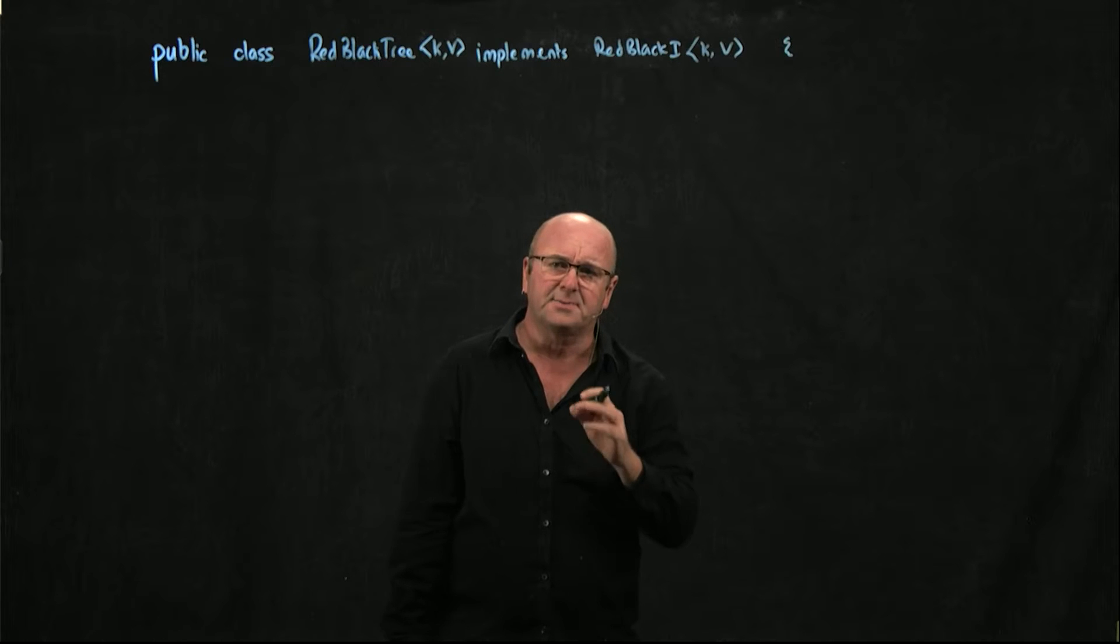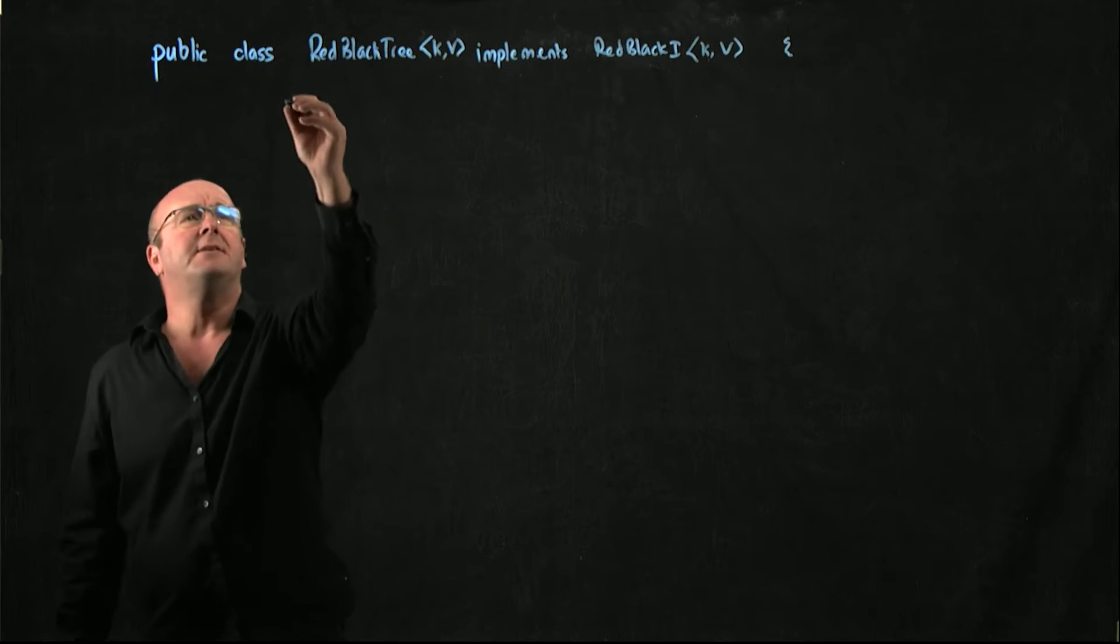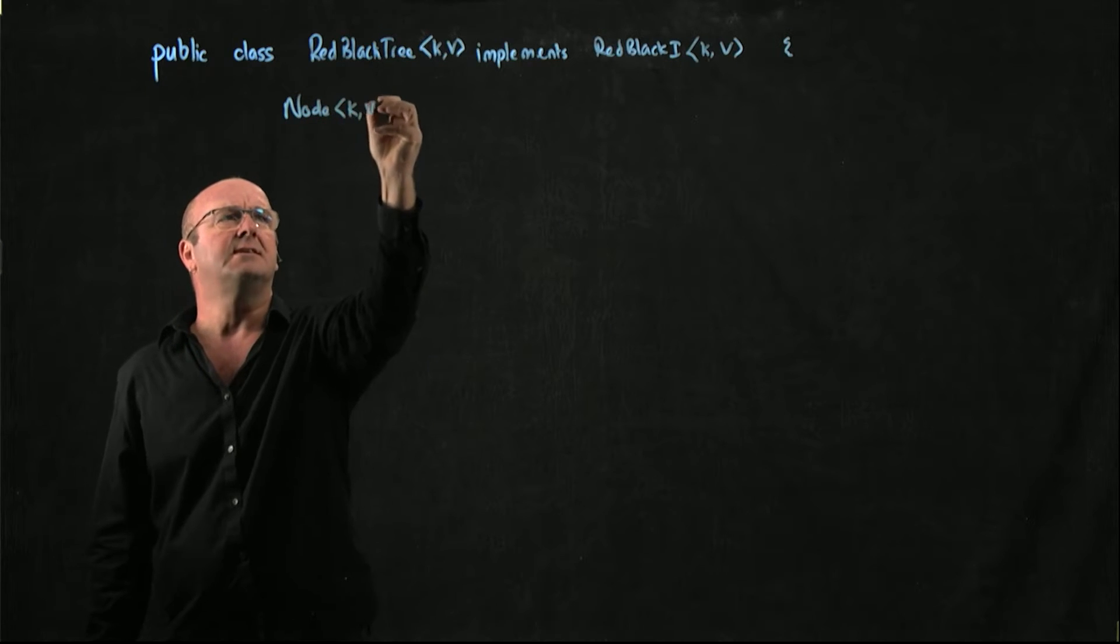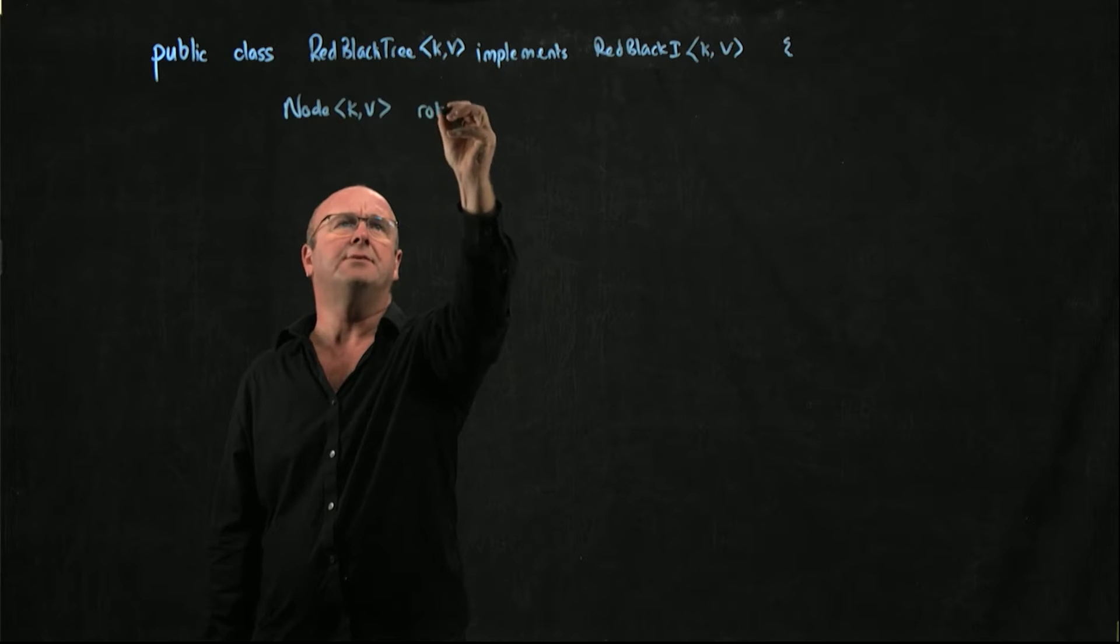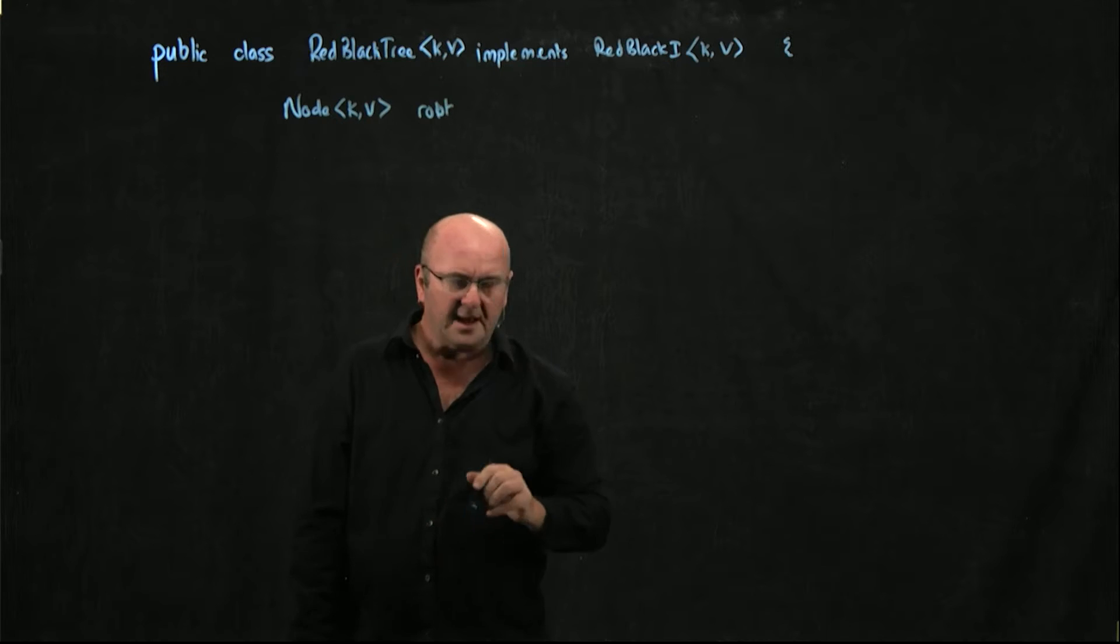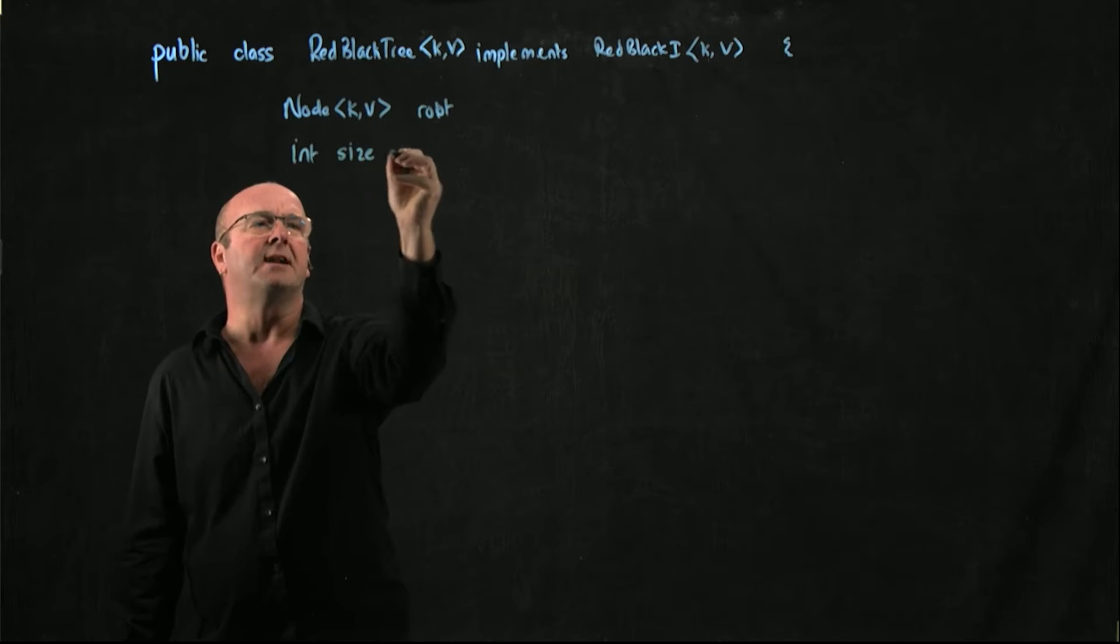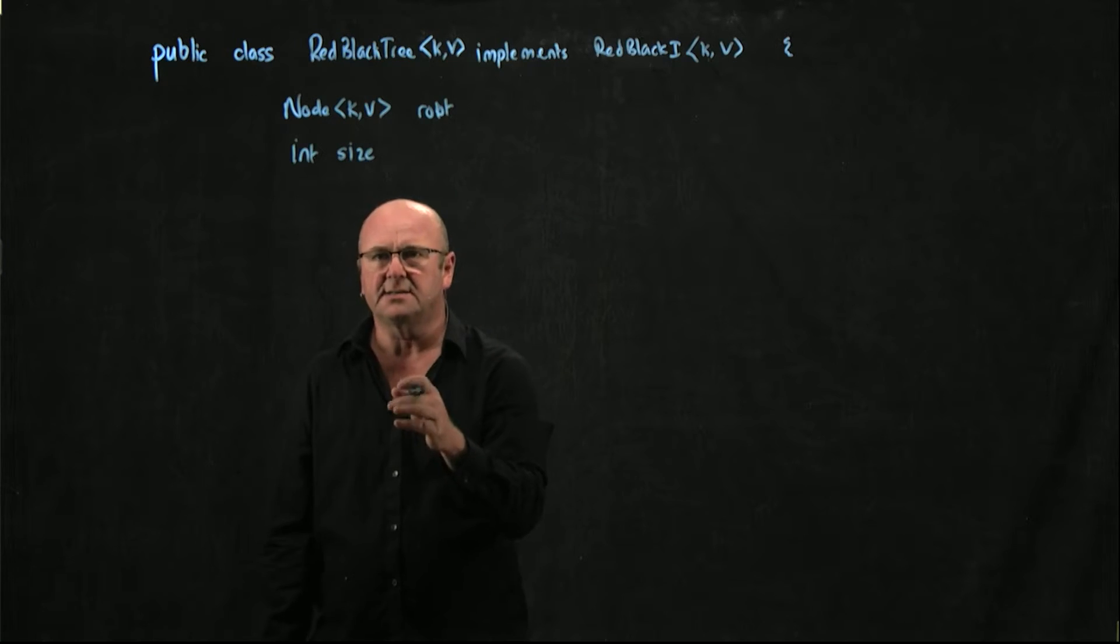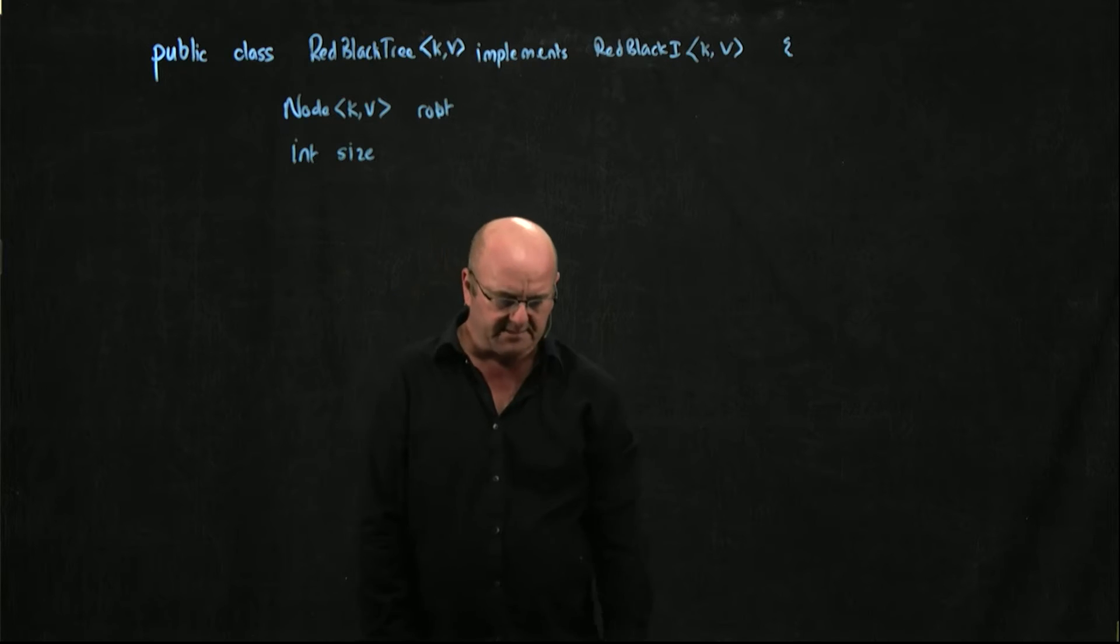In our red-black tree class, we need two globally scoped variables. We're going to have a root node, which is how we get access to our tree, and we're going to have a size counter, which is just the number of elements in our tree. In our constructor class, we're going to initialize the root value and initialize size to be zero.